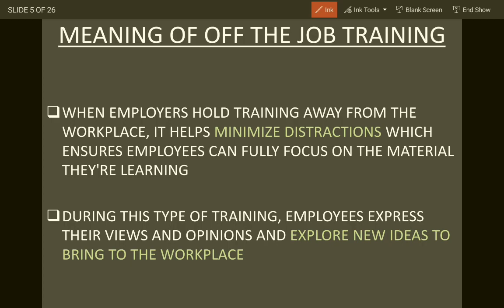Off-the-job training means employees or trainees are given training away from the workplace, so there is less distraction. In on-the-job training, employees are learning as well as working, so there is distraction. In off-the-job training, they are just focusing on learning, enhancing their skills, knowledge, capability, analytical skills, and conceptual skills, making themselves more productive and contributing towards achieving the organization's vision.